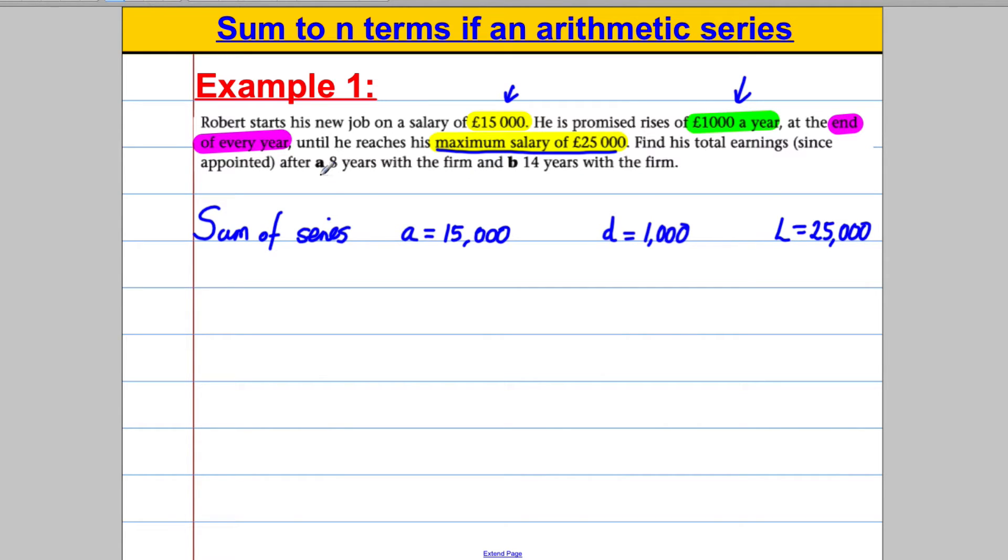And it asks for his total earnings since appointed. They don't just want his earnings after eight years. That's not what they want. They want how much he's earned from year one, year two, year three, year four, year five, year six, year seven and year eight added together. And sum to 14 years is all his money for the 14 years. So you have to distinguish this from questions asking what's his salary in the 14th year versus what are his total earnings from the start until the 14th year. So if they ask for his total earnings from the start until year 14, they're asking for S14, the sum up to 14, and you have to appreciate that.